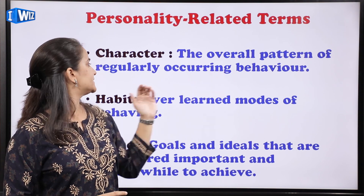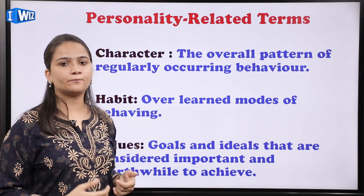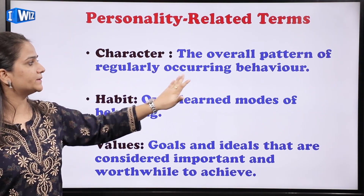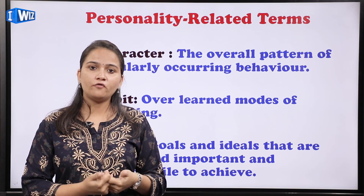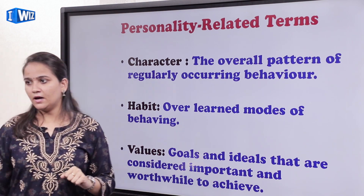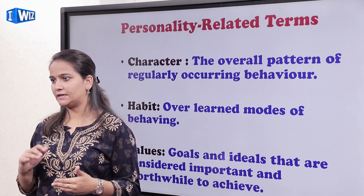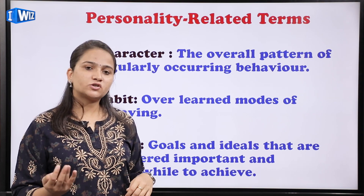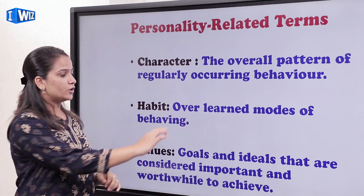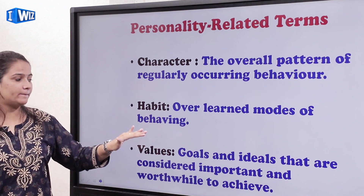Next is character — the overall pattern of regularly occurring behaviors। यह एक ऐसी term है जो हम day-to-day life में commonly सुनते हैं। Teachers also say: improve your character. आपका personality का overall pattern of regularly occurring behavior, यानि your collective collection of how you're behaving day-to-day, defines your character। Next is habit — habit is over-learned modes of behaving। जो आदत आपने बार-बार करने के बाद अपनी personality का हिस्सा बना ली है — जैसे every day you wake up and brush your teeth — after repeating it for so many years, it has become a part of your behavior।